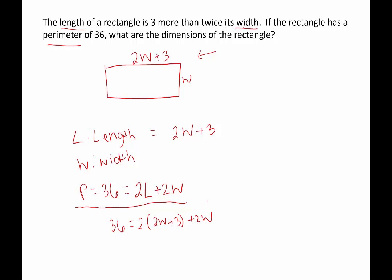And now we're down to just one single variable. We'll clean up the equation and then figure out the value of W first, and then we'll be able to figure out the value of the length as well.